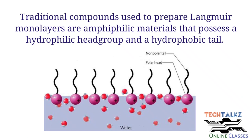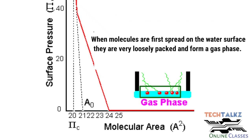At the water-air interface, the hydrophilic head group is attracted toward the water, while the hydrophobic tail is oriented toward the air. These amphiphilic molecules are arranged and float at the water-air interface.